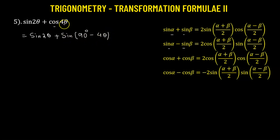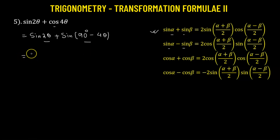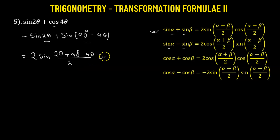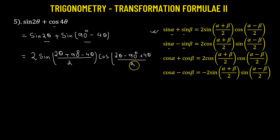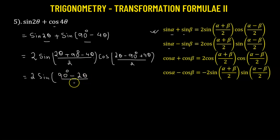We use the fact that sine(90° − θ) = cosine θ, so sine(90° − 4θ) is equivalent to cosine 4θ. Now 2θ represents alpha and (90° − 4θ) represents beta. We apply the sum-of-two-sines formula, giving 2 times sine of (2θ + 90° − 4θ)/2, multiplied by cosine of (2θ − 90° + 4θ)/2. Simplifying the first angle: (90° − 2θ)/2.